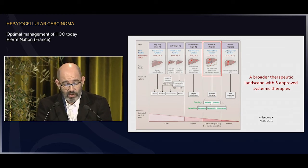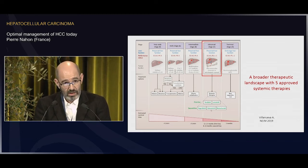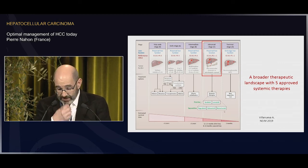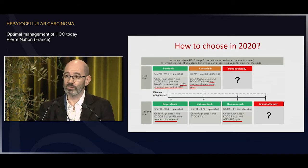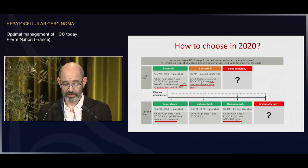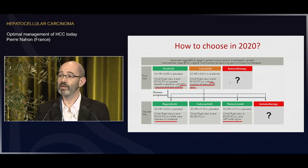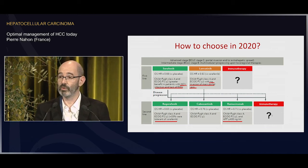In first-line therapies, we have sorafenib and lenvatinib, which are multikinase inhibitors. In second line, we have regorafenib and cabozantinib, also multikinase inhibitors, and ramucirumab, which is a monoclonal antibody. Now we are somewhat spoiled, because we don't know how to choose between these molecules — we only have phase three trials demonstrating superiority or non-inferiority. We don't know how to choose in first-line between sorafenib and lenvatinib, and someday between those two and immunotherapy. The same goes for second-line therapy between regorafenib, cabozantinib, ramucirumab, and someday immunotherapy.